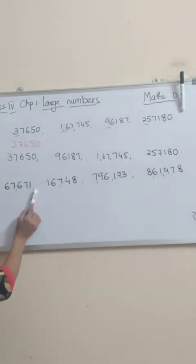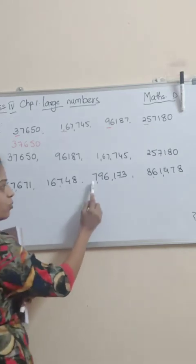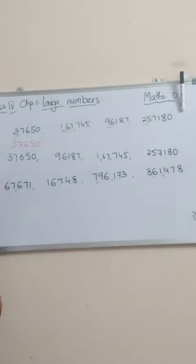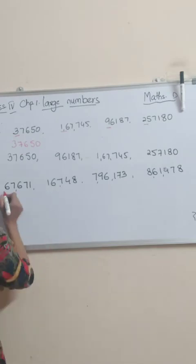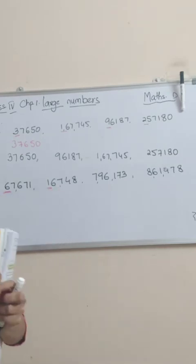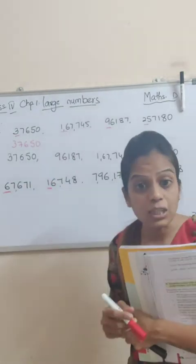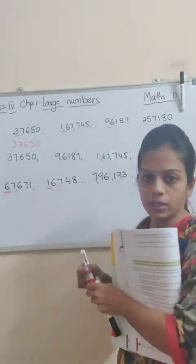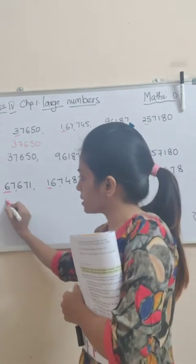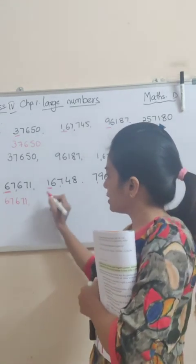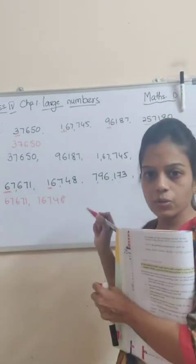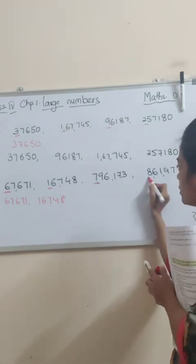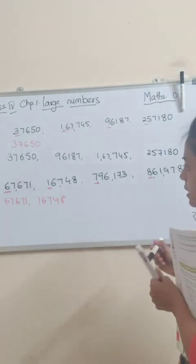Now jab hum 5 wale leh lein, students, first we will see the first numbers. Here we are doing descending order. Descending order means bada se chhota. Toh ab humko dekhna hai pehle bada kaunsa hai. Six bada hai ke pan bada hai? Six is the bigger number. So we will write 67671 first. Then we will write 16748. Now ab aate hai hum six digit numbers mein. Six digit numbers mein kaunsa hai — here is 7, here is 8. Which is bigger one? Eight.